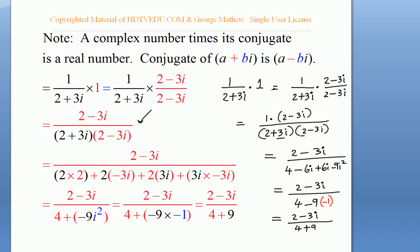You have 2 minus 3i and do all the FOIL multiplication and you get the same result: 2 minus 3i over 4 plus 9.